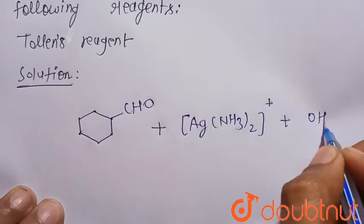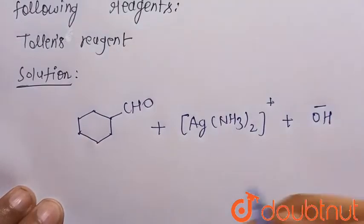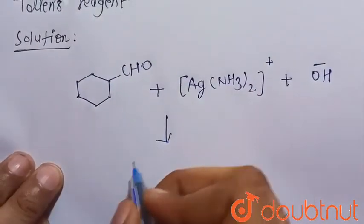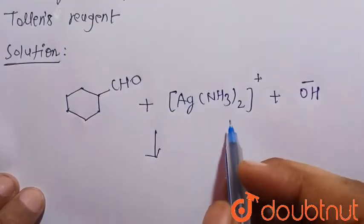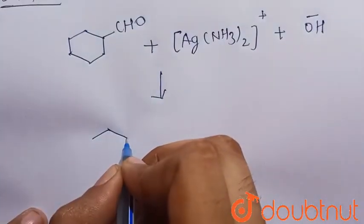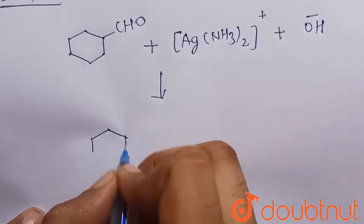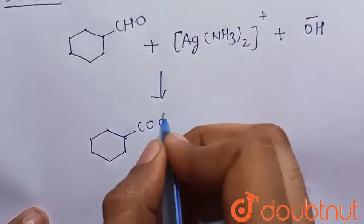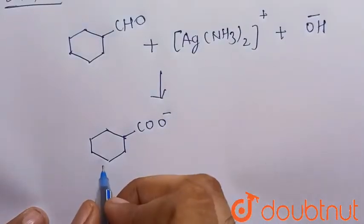So we know that Tollen's reagent is oxidizing in nature, so it will oxidize this cyclohexane carbaldehyde into the cyclohexane carboxylate ion, that is COO-. So this is the cyclohexane carboxylate ion...